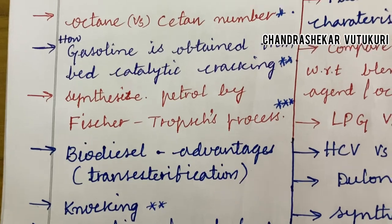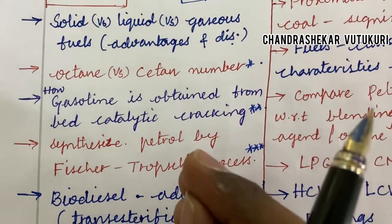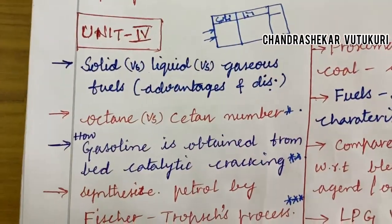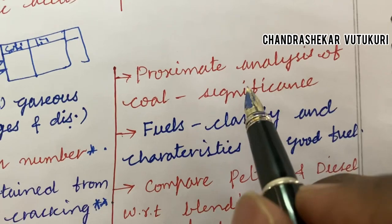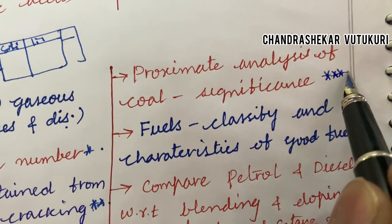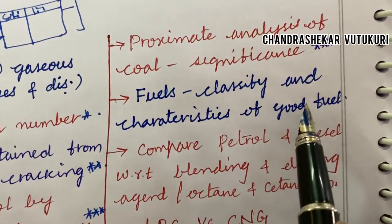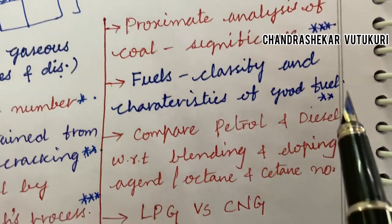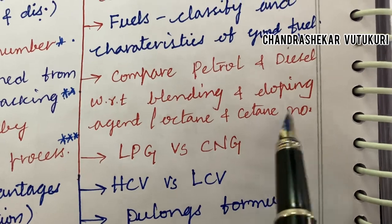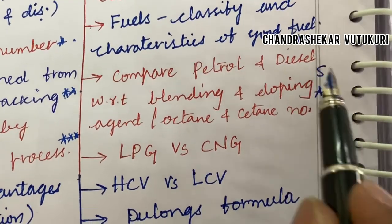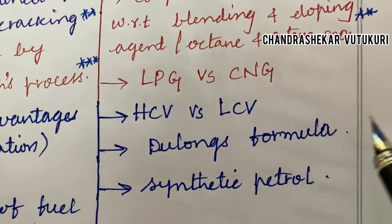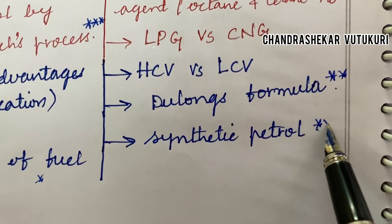Biodiesel advantages and knocking is said to be a short question, and calorific value of a fuel is also a short question. There is no separate video for the short questions — if you are perfect with all these concepts in long and short form, the questions will come in the paper. Proximate analysis of coal and its significance is a topmost question. Classify fuels and characteristics of a good fuel, compare petrol and diesel with respect to octane and cetane number. Blending and doping agents may also be topmost questions for 5 marks. LPG versus CNG differences, HCV versus LCV, Dulong's formula, and synthetic petrol may also be short questions.